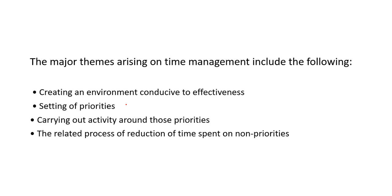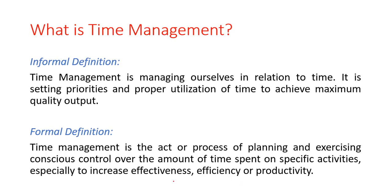A few more important points in the time management process: first, create an environment conducive to effectiveness and setting priorities. We have many activities or tasks, so we have to set the priority for each task and carry out activities around those priorities. Tasks with the highest priority will be executed first; tasks with the lowest priority will be worked on later. Additionally, reduce time spent on non-priorities — spend less time on low-priority tasks and more time on high-priority tasks. In this way, we can use time effectively to increase the effectiveness, efficiency, or productivity of a software application.